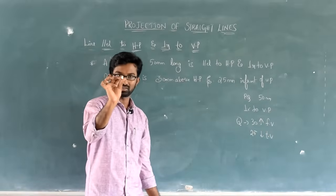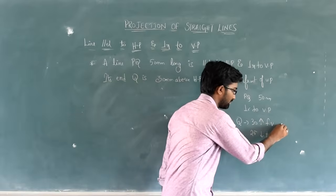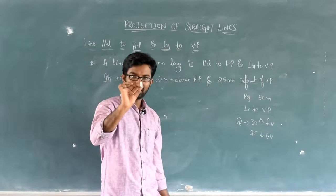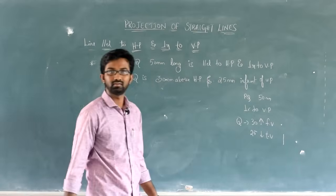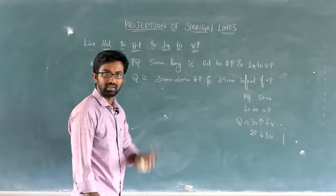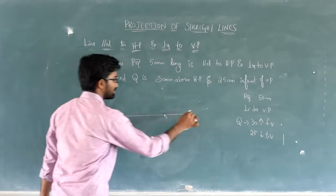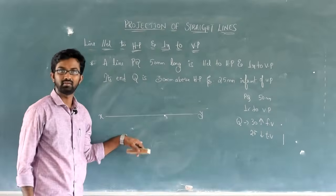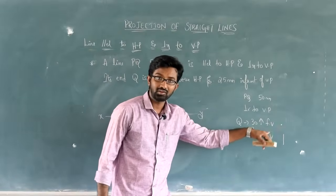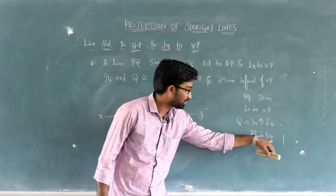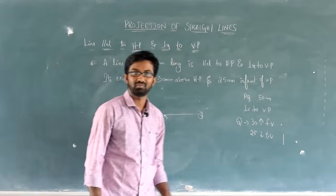Then 25 mm in front of means below. VP top view. Okay? Now, this is the position. So, front view appears as point. Top view appears as vertical line. Clear? Now, let us solve this.